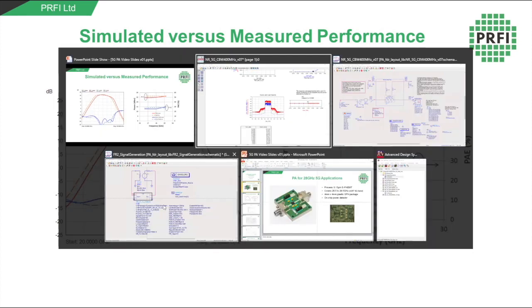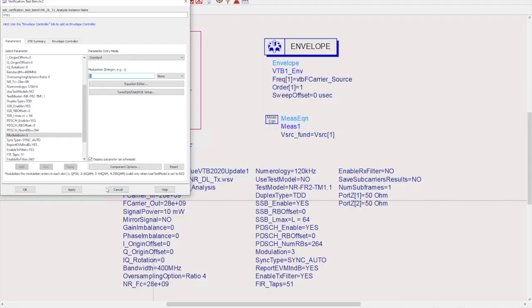To do this we can use the envelope simulator in Keysight ADS. Here's how we set up simulation. We start off with a virtual test bench or VTB. This is what's going to generate our test signal. This is one for the 5G downlink and the same library has VTBs for NR uplink as well as LTE and many other standards.